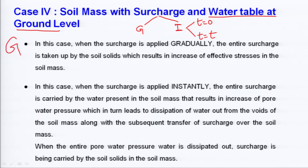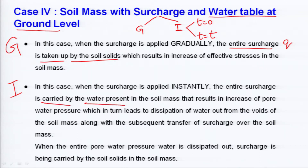When the surcharge is applied gradually with the water table at ground level, the entire surcharge is taken up by the soil solids, resulting in an increase of effective stress in the soil. The entire surcharge value q is transferred to the soil solids in the case of gradual application.